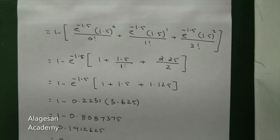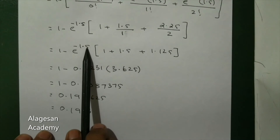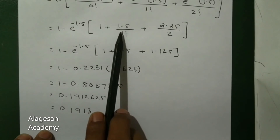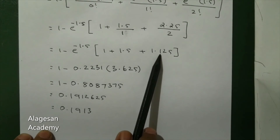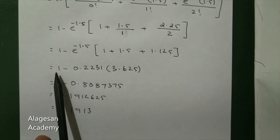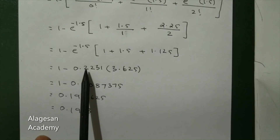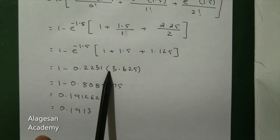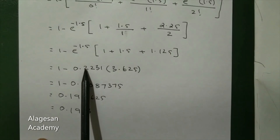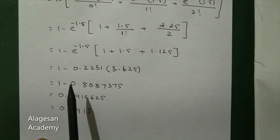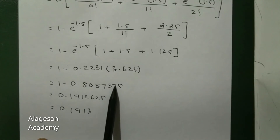2 factorial equals 2. So we get 1 minus e power minus 1.5 into 1 plus 1.5 plus 1.125, which gives 1 minus 0.2231 into 3.625, and multiplying we get 0.8087375.